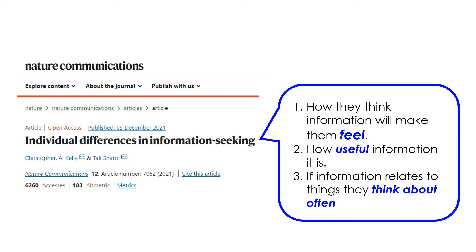Moreover, people sometimes seek information but other times avoid it. Whether people seek or avoid information is subject to at least three factors: first, how they think information will make them feel; second, how useful it is; and third, if information relates to things they think about often. Different people assign different weights to those three factors. Feelings are sometimes a better predictor of people's decisions than data or information.